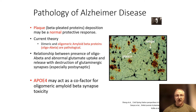ApoE4, one of the genetic markers for increased risk of Alzheimer's disease, also appears to act as a co-factor for these small protein fragments and their synaptic toxicity.